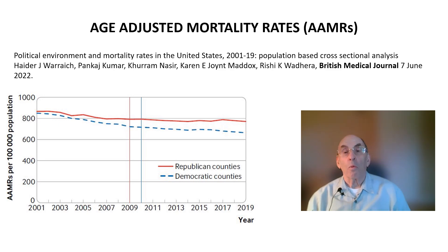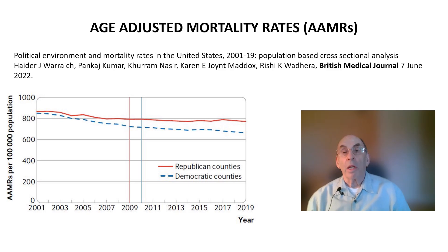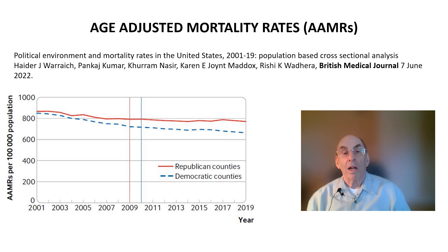Results were presented per 100,000 persons to account for differences in population between counties. The time period covered in the study included five presidential elections but ended before the onset of the COVID-19 pandemic, so the results are not skewed by responses to the pandemic and instead focus on the major causes of death such as heart disease and cancer. This figure shows the overall results for the entire population.